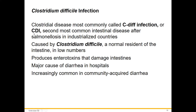C. diff lives normally in the intestine, making it opportunistic. It produces enterotoxins that can damage intestines and is a major cause of diarrhea in hospitals — specifically antibiotic-associated diarrhea. When we take strong antibiotics and disrupt gut flora, our own flora goes out of balance and C. diff can overgrow. We're seeing it more commonly in community-acquired diarrhea now, though it was previously really only seen in hospital settings.